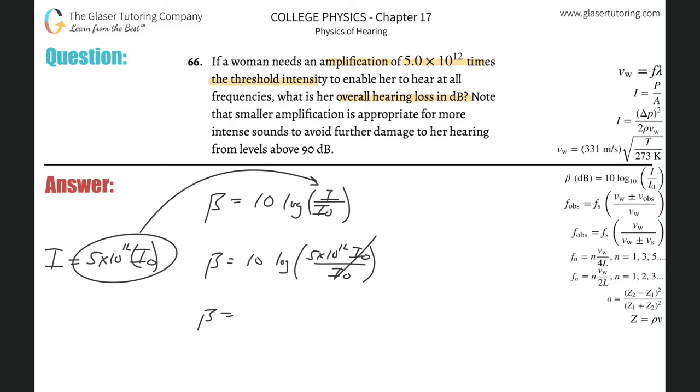So 10 times log of 5 times 10 to the 12. And what do we get? Wow, she has a 127 decibel value hearing loss.